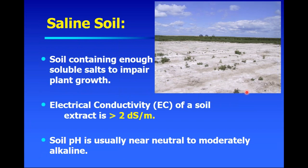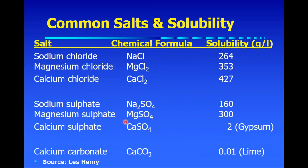The rest of the time we'll spend talking about soil salinity — simply a soil that has enough soluble salts to impair crop growth, where electrical conductivity will usually be above two. Now, one of the questions that comes up is: what are the different salts that are in soil? There are many different salts in soil.